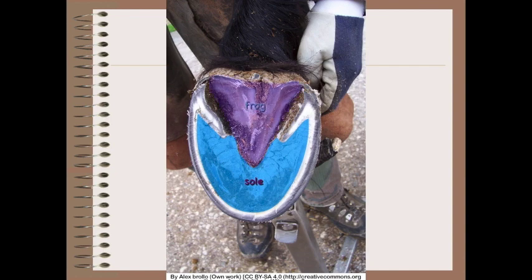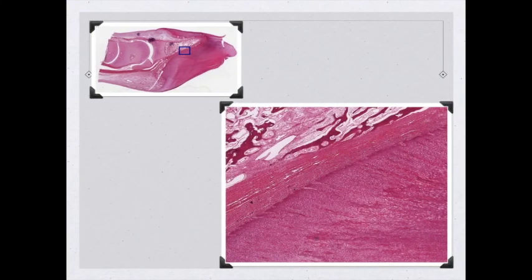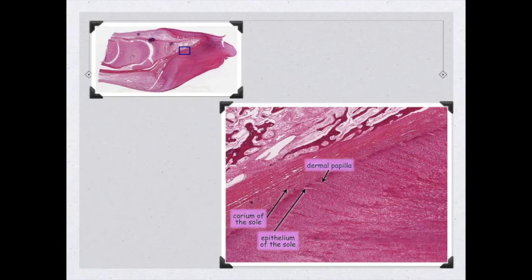The frog is a wedge-shaped structure located between the two bars. The depressions between the two bars are the paracuneal, or collateral, sulci. The frog consists of two crura and a central sulcus; the central sulcus corresponds to the inner surface with the frog stay or spine. The horny portion of the frog is the softest portion of the hoof, containing more water than even the sole. Both the frog and the sole also consist of tubular horn. The sole is formed by the corium of the sole with dermal papillae, and likewise the corium of the frog produces the horn of the frog.